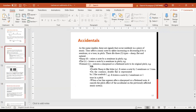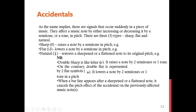Accidentals either increase a note by a semitone, increase it by a tone, or decrease a note by a semitone. If you meet an accidental called a sharp — can you see the sharp sign here? — this sharp sign raises a note by a semitone. So if you're singing a note and you want to know whether it's going to be raised by a semitone, you may see this particular sign beside it.